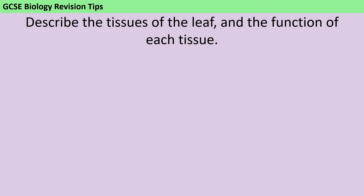This question is going to be a level-marked question, which means you don't just get six marks for saying six true things. You need to make sure that you're answering all the different parts of the question and linking those together. So we're going to start off by naming the tissues of the leaf, then talking about what their functions actually are, and then thinking about how they are adapted to actually do those functions.